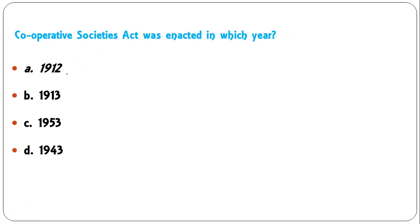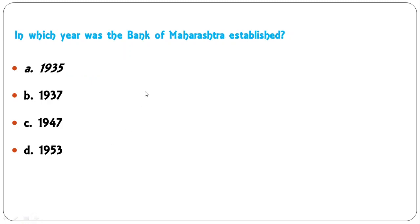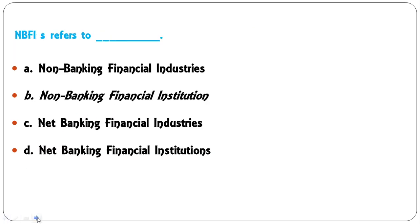Cooperative Societies Act was enacted in which year? Options: 1912, 1913, 1953, 1943. The Cooperative Societies Act was enacted in 1912. A is the correct answer. In which year was the Bank of Maharashtra established? Options: 1935, 1937, 1947, 1953. The correct answer is 1935.